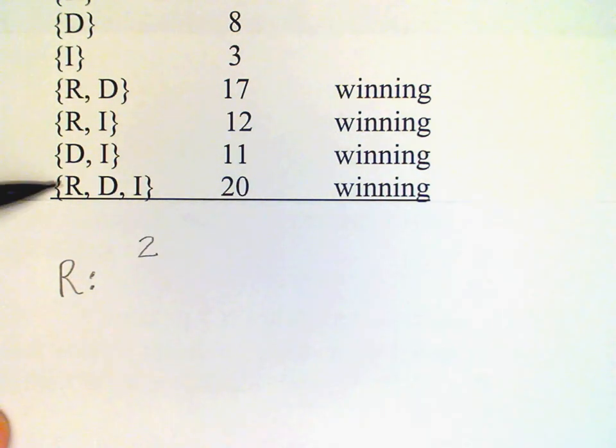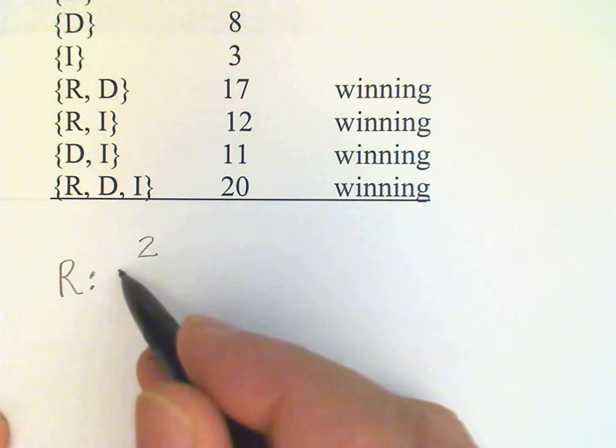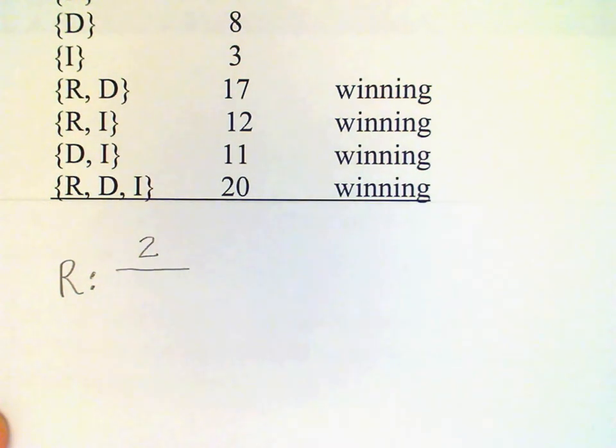R is not critical in this coalition because R can be removed and that leaves D, I, which is a winning coalition. Then we divide by the number of times that all voters are critical.